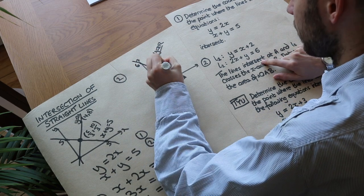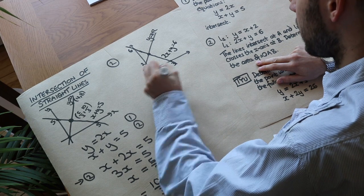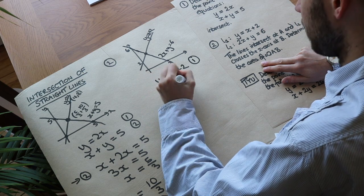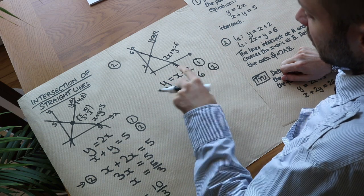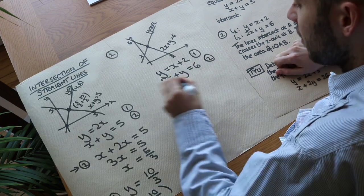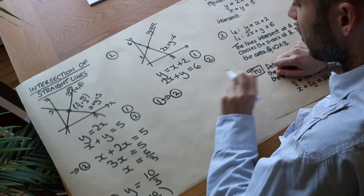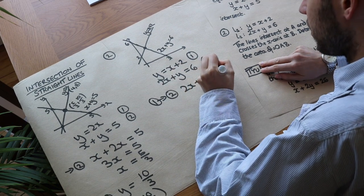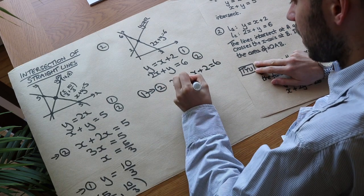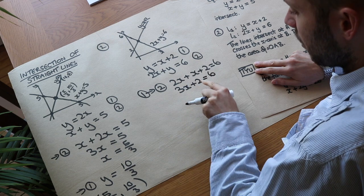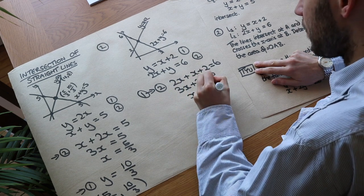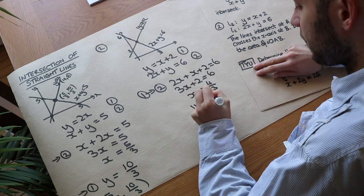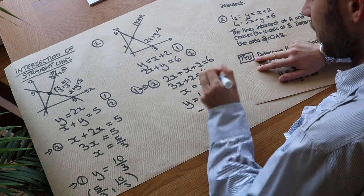We want to find the intersection point, so we solve simultaneously. Since y is already the subject in equation 1, we substitute into equation 2: 2x plus (x plus 2) equals 6. Simplifying, 3x plus 2 equals 6, so 3x equals 4, giving x equals 4 over 3. Substituting back: y equals 4 over 3 plus 2, which is 4 over 3 plus 6 over 3, equalling 10 over 3.